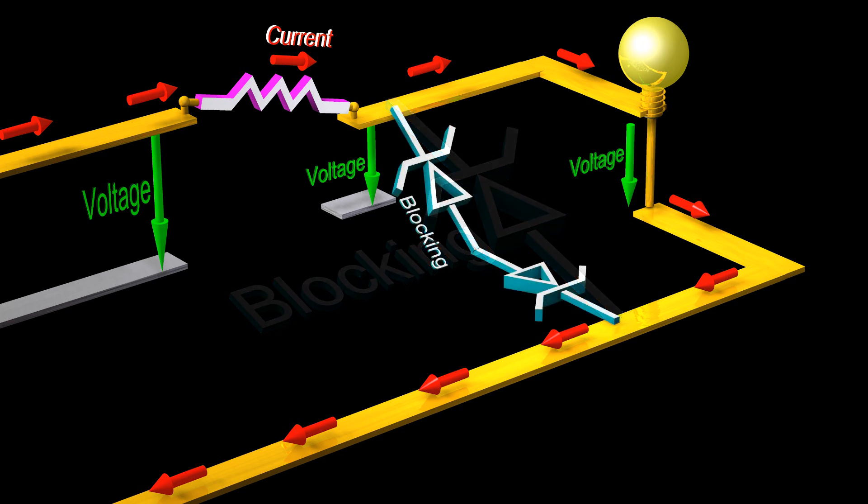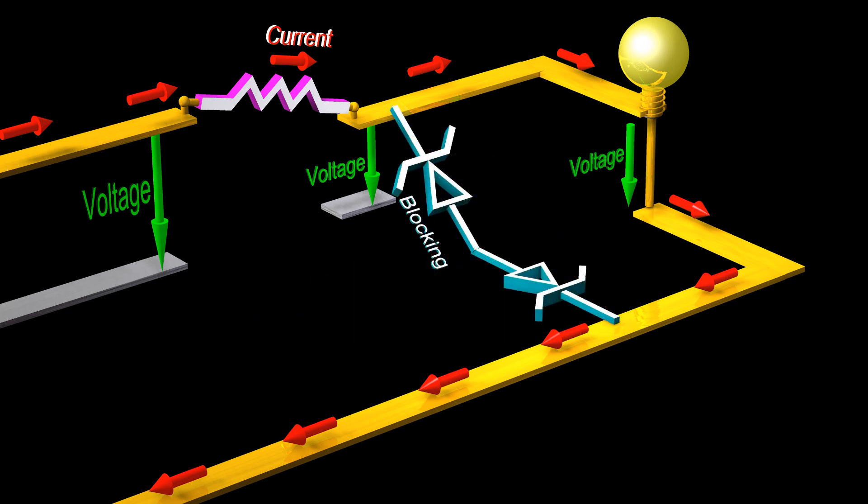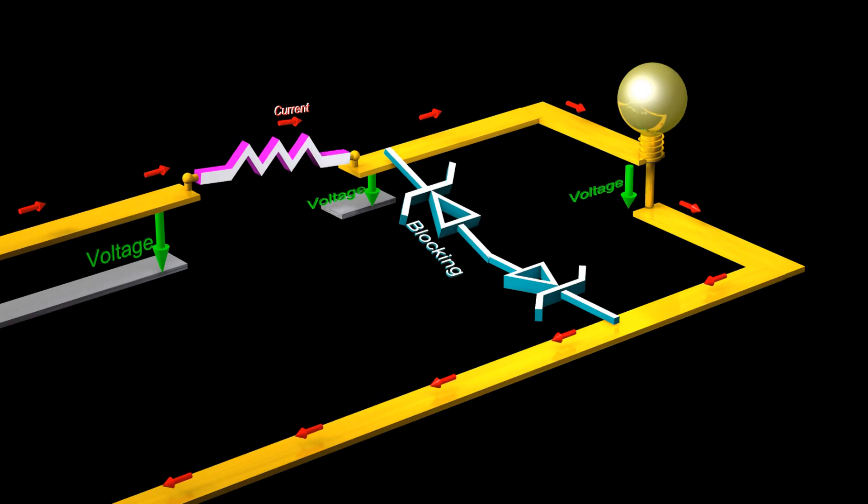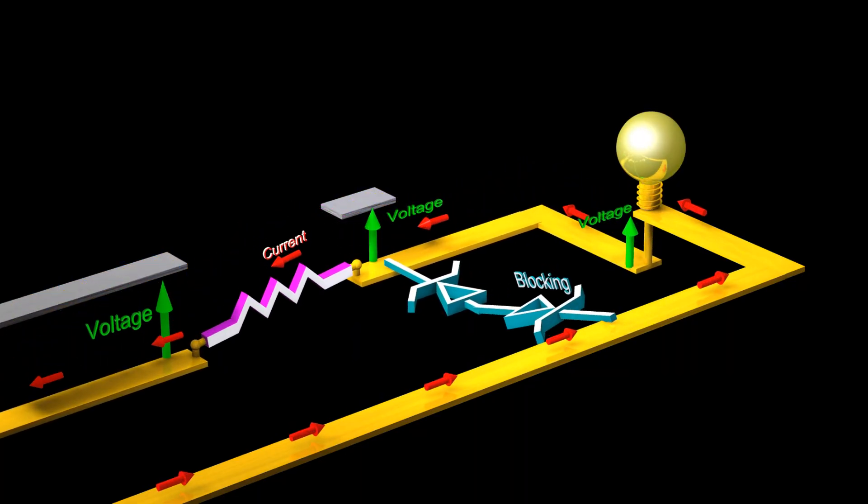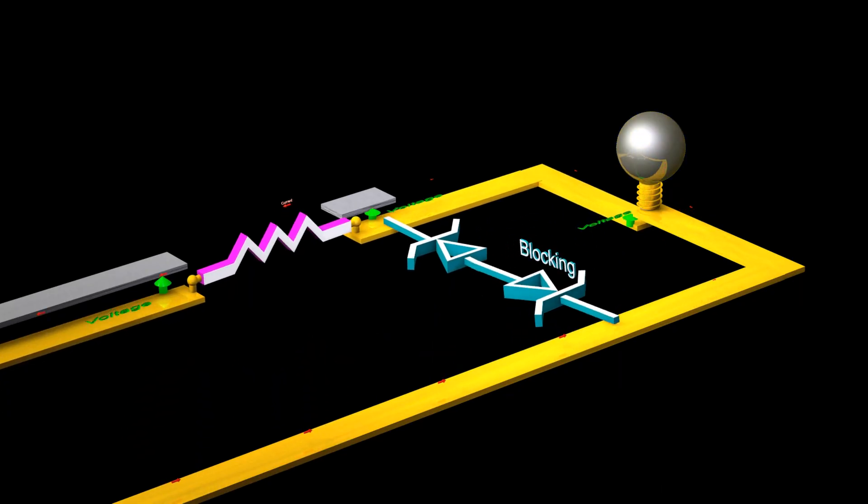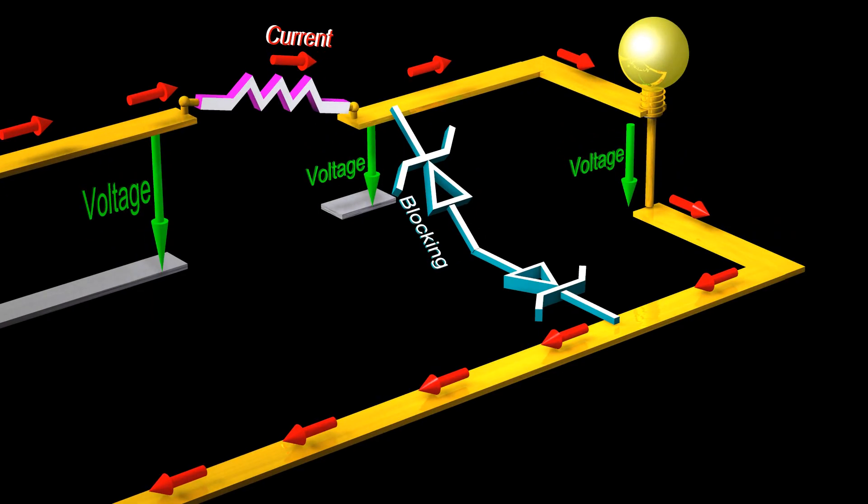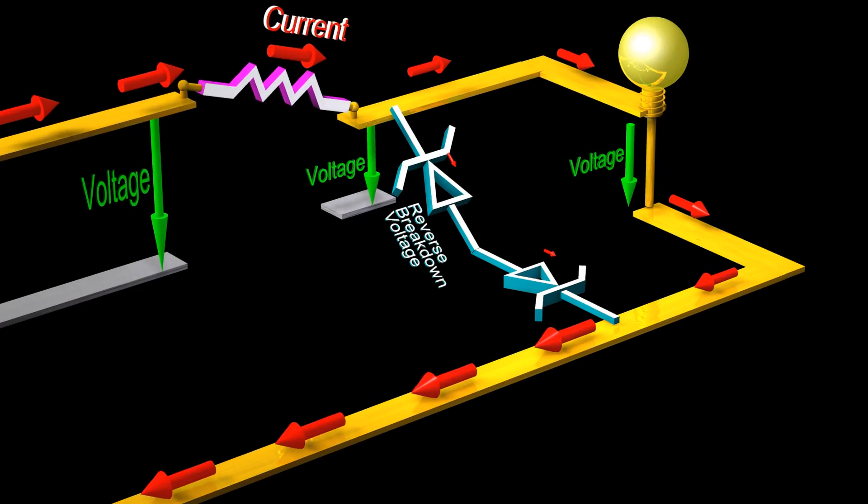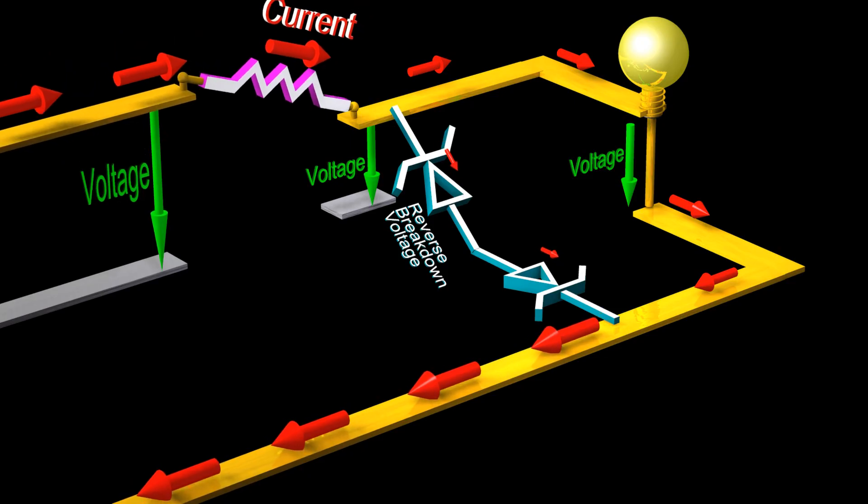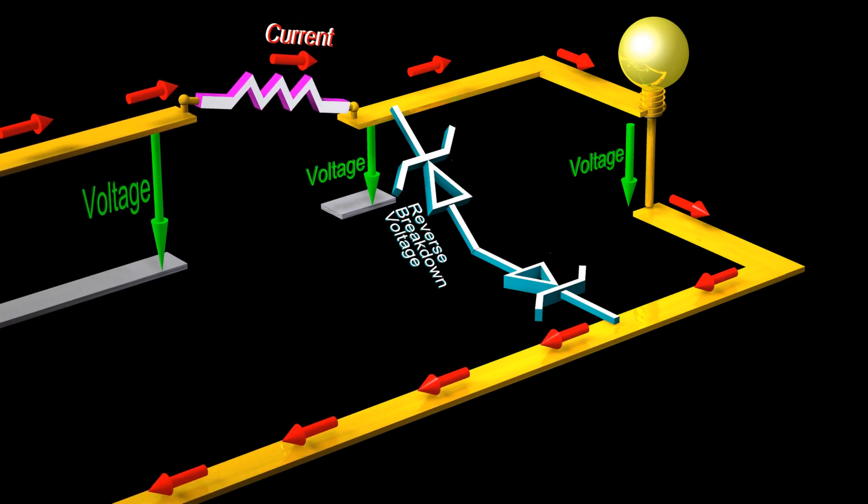Suppose we use two Zener diodes in series pointed in opposite directions. We can now apply a positive or negative voltage to the output, while protecting the output against transient overvoltage conditions in either direction.